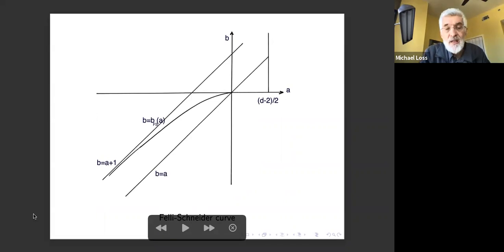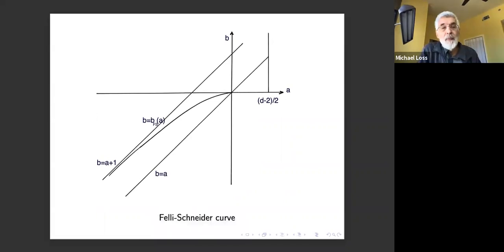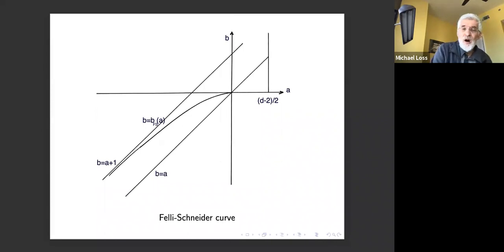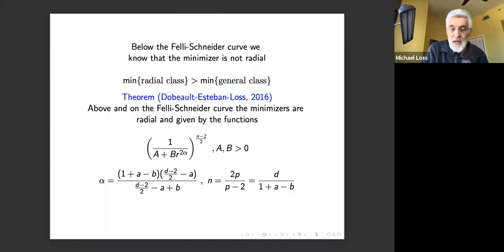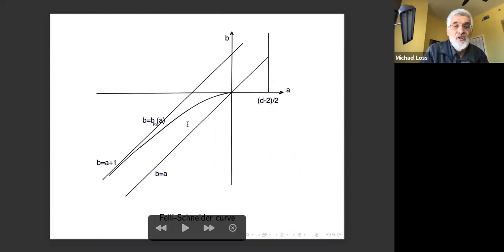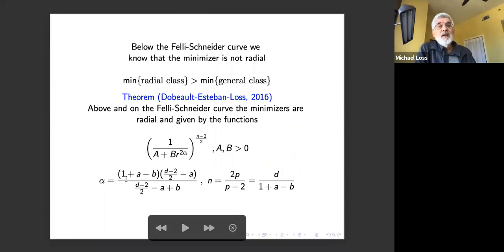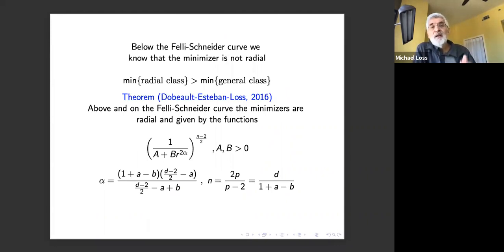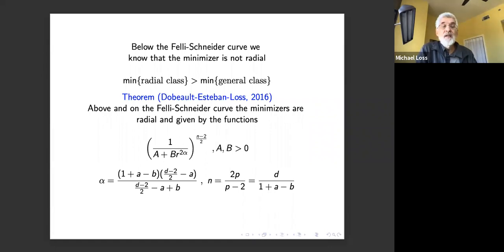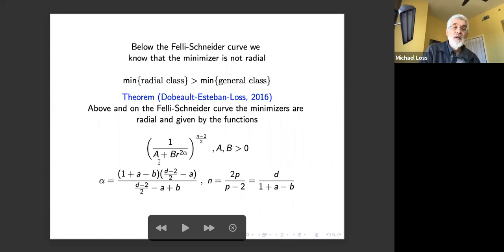There is a curve called the Felli-Schneider curve, which can be written explicitly. When your parameters (a,b) lie below this curve, the minimizer is not radial — minimizing over the radial class gives a strictly larger number. But on and above the Felli-Schneider curve — by our 2016 theorem — the minimizers are radial, given explicitly by functions of the form (1/(a + b·r²))^{(n−2)/2}.